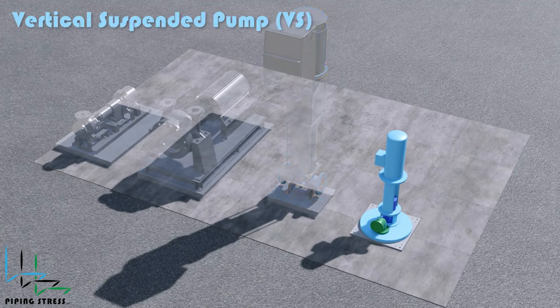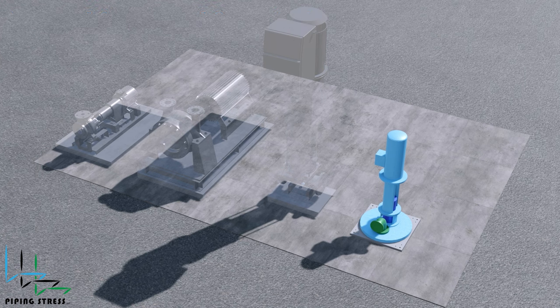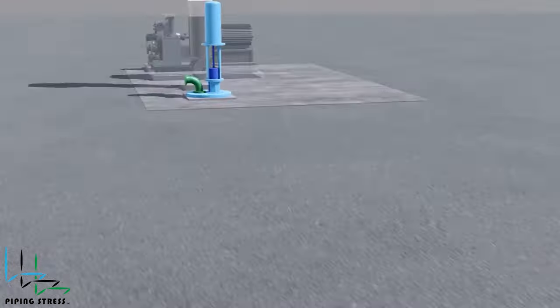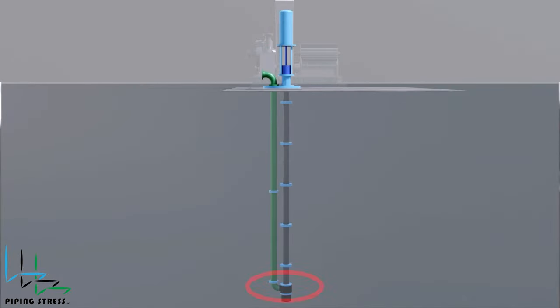Vertical Suspended Pump: These pumps are specifically designed for applications where space considerations, such as in offshore installations or limited footprint areas, make a vertical configuration more practical. As the name implies, the impeller is suspended from the supporting level.